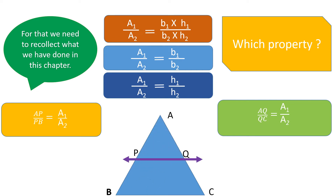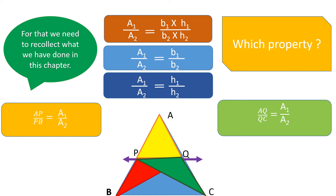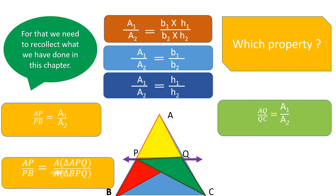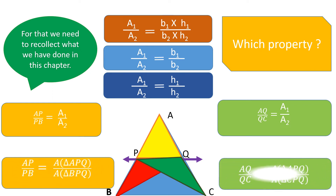Looking at the diagram, for triangle APQ I can take AP as the base, and for triangle BPQ I can take BP as the base. Similarly, for triangle APQ I can also take AQ as the base, and for triangle CPQ I can take QC as the base. So: area of triangle APQ / area of triangle PBQ = AP/PB, and area of triangle APQ / area of triangle CPQ = AQ/QC.